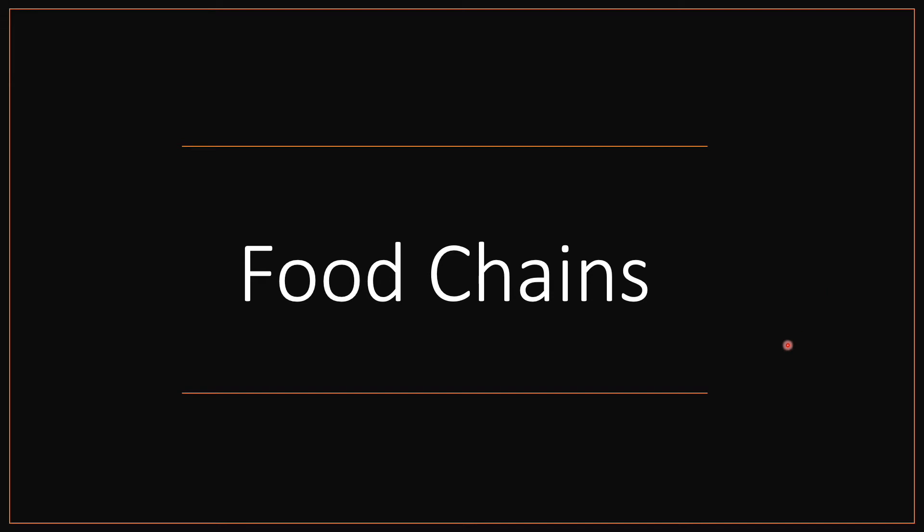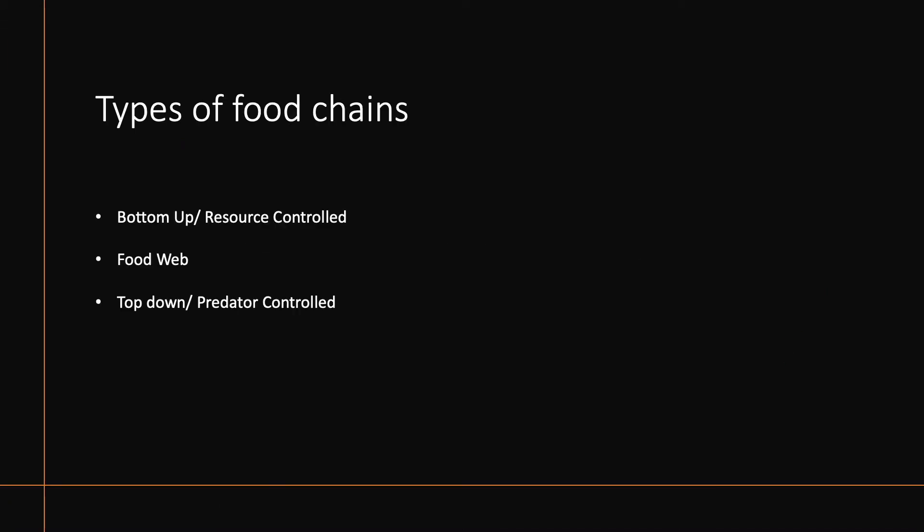Hello and welcome back to the Brain Boost channel. Today we're going to be talking about food chains. The different types we're going to look at are the bottom-up, which is controlled by resources, the food web, and the top-down, or predator-controlled food chain.